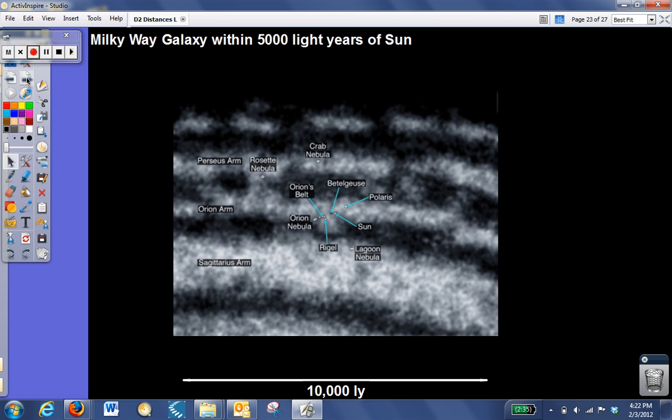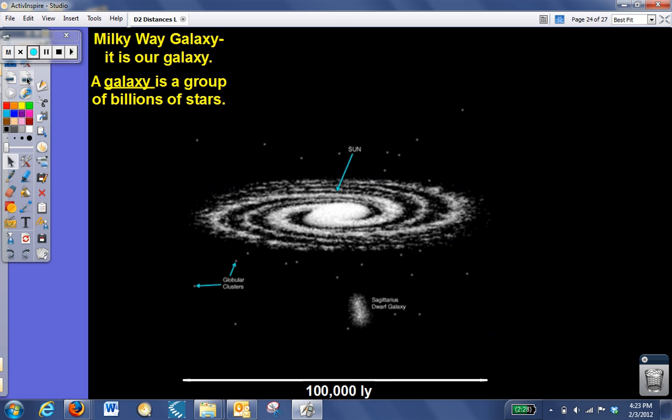When we get to finally 10,000 light years, we can now see several arms of the Milky Way galaxy, but we still can't see the entire Milky Way galaxy by itself. It's only when we get to 100,000 light years that we can see all the stars that make up our galaxy. Please put that in your lab notebook. A galaxy is a group of literally billions of stars, hundreds of millions to hundreds of billions of stars. Our galaxy is just one of many, many galaxies in our universe, and is called the Milky Way.